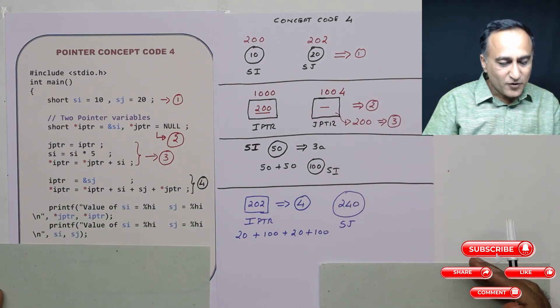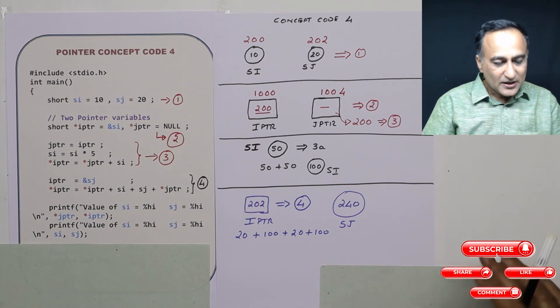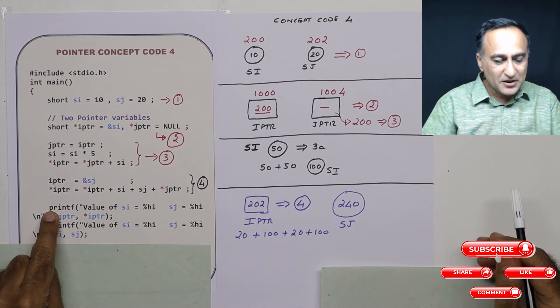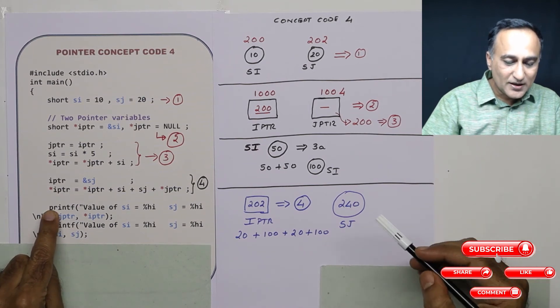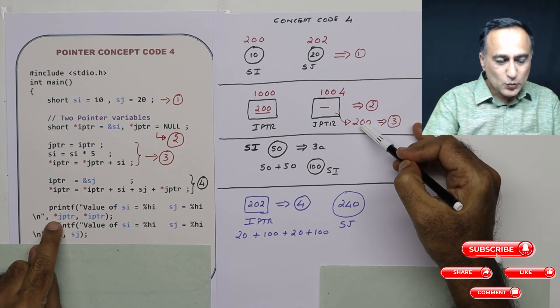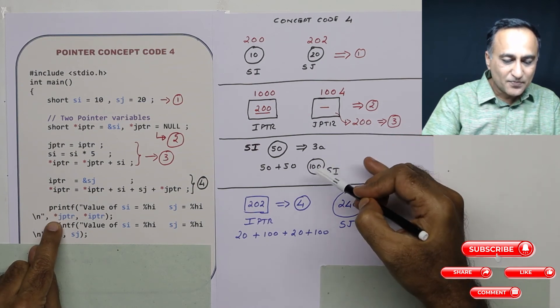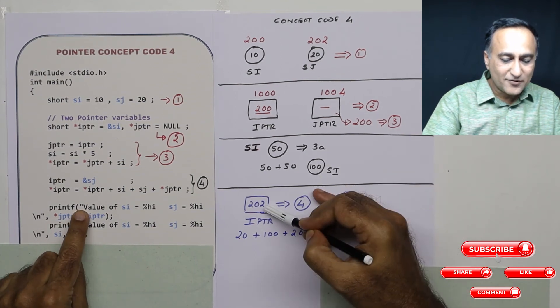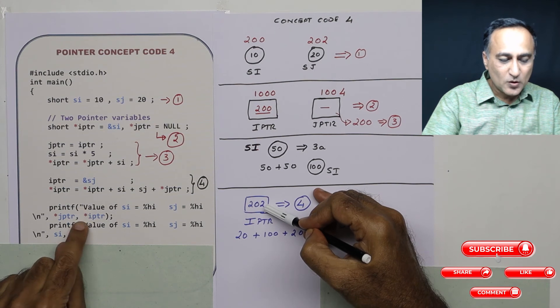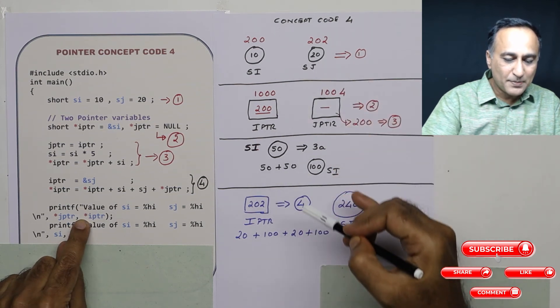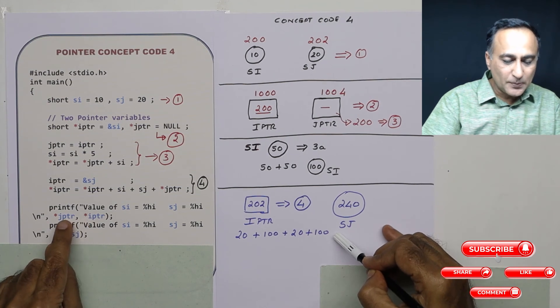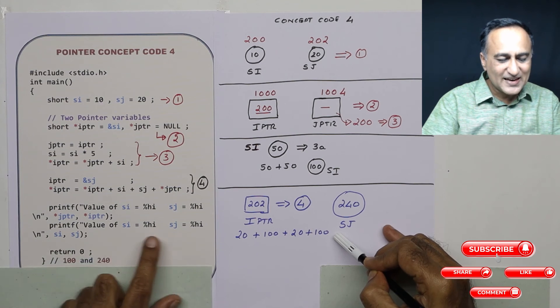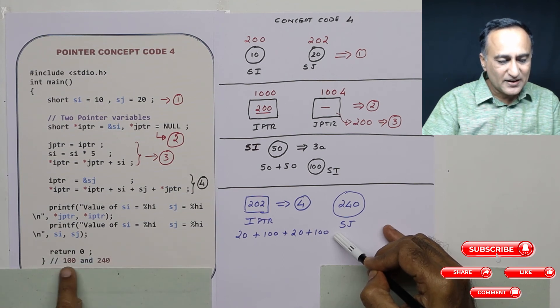So now if we go ahead and print the value of SI and SJ. We are not directly printing. We are printing JPTR. JPTR is what? JPTR is 200. What is value at address 200? It happens to be 100. So this will print 100. What is IPTR? IPTR refers to address 202. What is star? Value at address 202 happens to be 240. So it will print 100 here and then followed by 240. Now I am directly printing SI and SJ. So it's going to print 100 and 240.